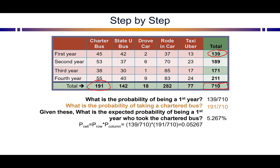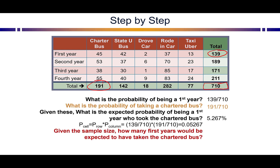Multiplying those two probabilities together — 139 over 710 times 191 over 710 — gives us the expected cell probability. Then multiplying by the total sample size of 710 gives an expected cell count of 37.39 first years expected to have taken a charter bus. Our actual number is 45. Chi-square helps us figure out whether that difference is large enough to be statistically significant — whether the actual distribution differs meaningfully from the expected distribution.